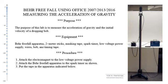We attach the electromagnet to the low voltage power supply, attach the Behr freefall device to the spark timer, and put the tape in as indicated.